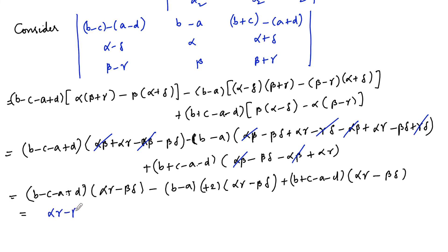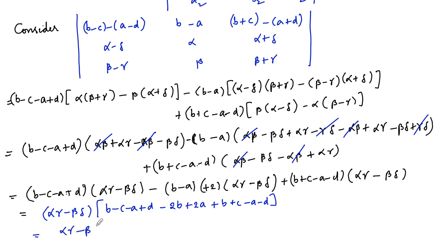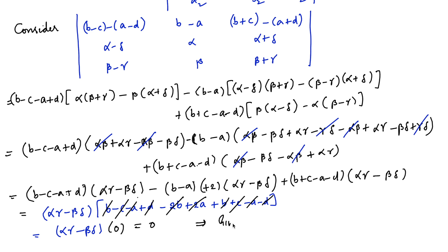We see that (alpha·gamma minus beta·delta) is common to all three terms, so we factor it out. The remaining bracket is: (b minus c minus a plus d) minus two times (b minus a) plus (b plus c minus a minus d). Expanding: 2b minus 2b cancels, and minus a minus a plus a plus a cancels, and minus c plus c cancels, and d minus d cancels. The sum is zero. Therefore (alpha·gamma minus beta·delta) times zero equals zero, so the determinant is zero and hence the given lines are coplanar.